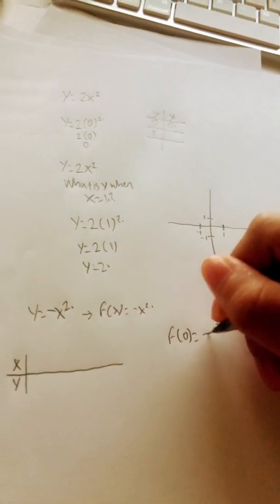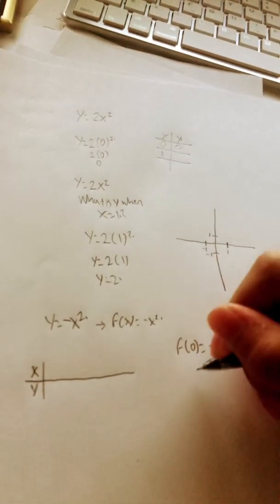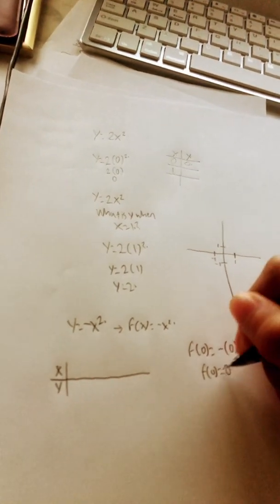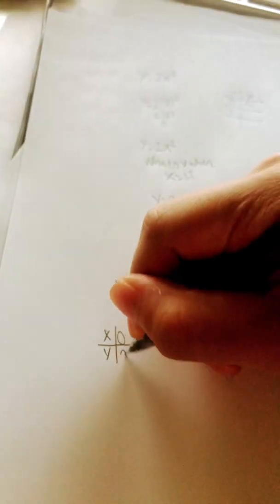So negative, the quantity 0, quantity squared. That would be f of 0 equals 0, right? Because negative 0 is really just 0. So when x equals 0, y equals 0.